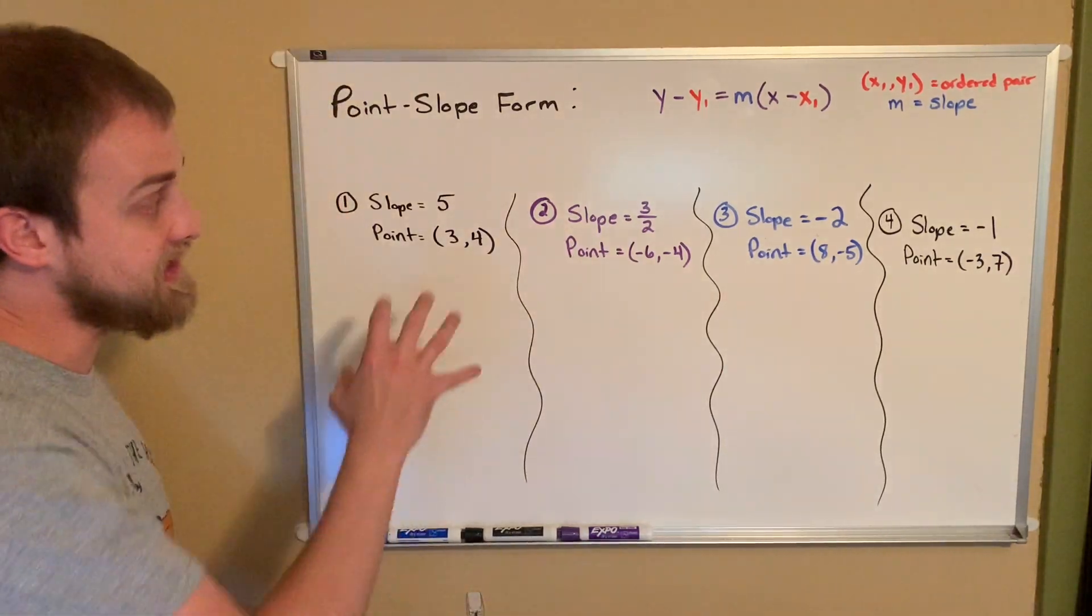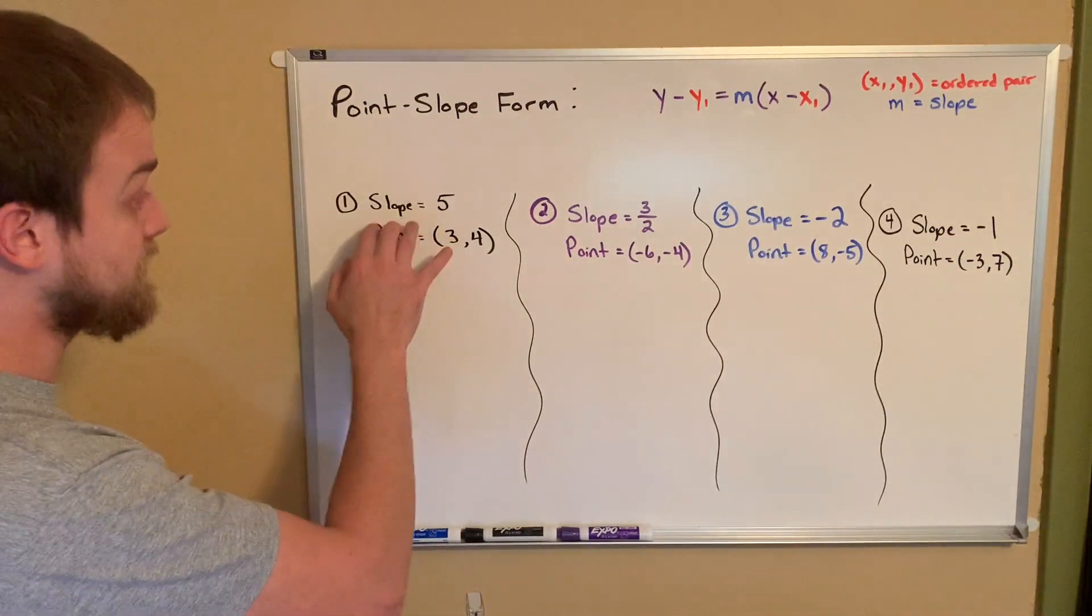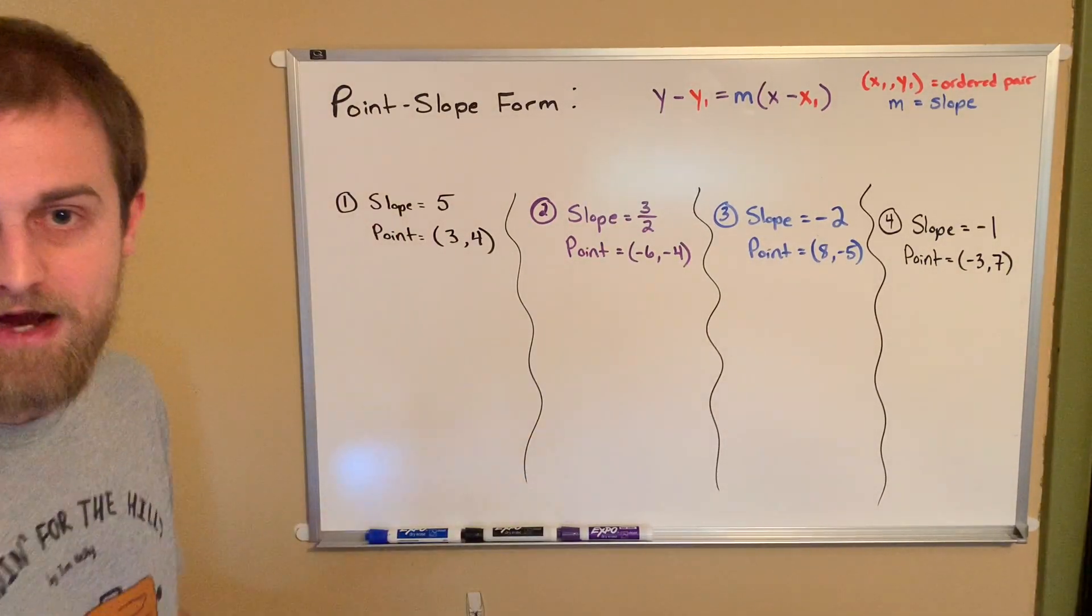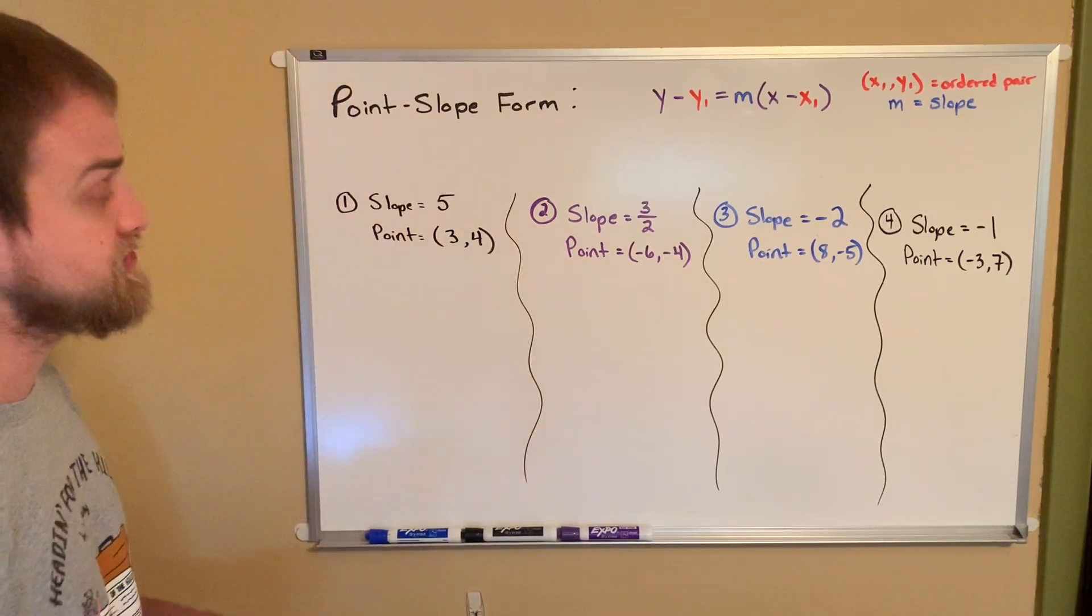What I'd like to do today is build point-slope form equations when we're given a slope and an ordered pair, or a point. So no better way than to just jump right in.